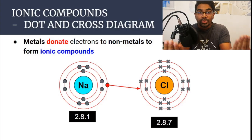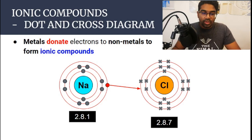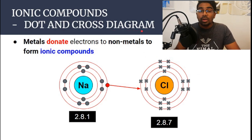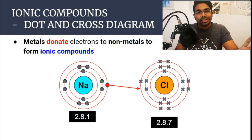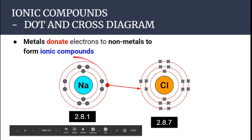Once we have an ionic bond between two elements, we have an ionic compound, which we represent using a dot-and-cross diagram. A dot-and-cross diagram shows the electron configuration of an ionic compound for the formula unit. Electrons are represented as dots and crosses to differentiate their source — for example, electrons from sodium are shown as dots while electrons from chlorine are shown as crosses.